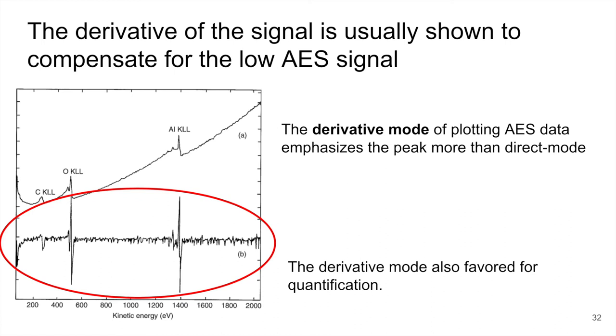So because the values of those Auger electrons tend to be pretty small, they're pretty small compared to the background here. So to show it in a way to be able to see the peaks a little easier, what we often do is convert the signal to a derivative. So we look at the derivative of the signal, and that kind of compensates for the low signal levels. And so you see here that I've highlighted, these are the derivatives of the peaks. And so you can see a little bit more pronounced where those happen. So it emphasizes the peaks more than in the direct mode. So when you look at AES, you often see this derivative mode used. So if you see peaks that look like this, where there's a peak and then a positive and a negative, then you're looking at the derivative mode. And that's favored for quantification as well. But that's another sign that we're looking at AES.